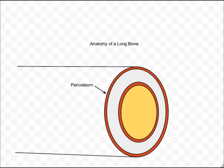The tough outer covering of bone is called the periosteum. Peri is a prefix which means enclosing, or surrounding, as in perimeter. Osteo is one of the word roots for bone.